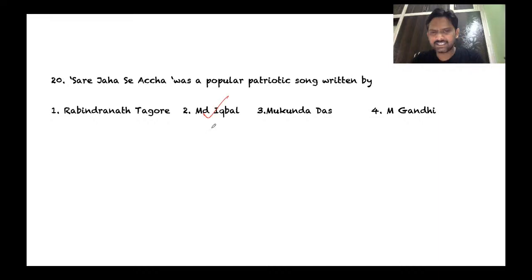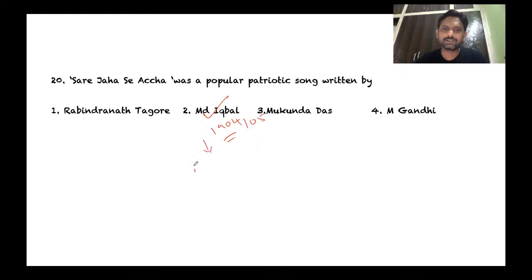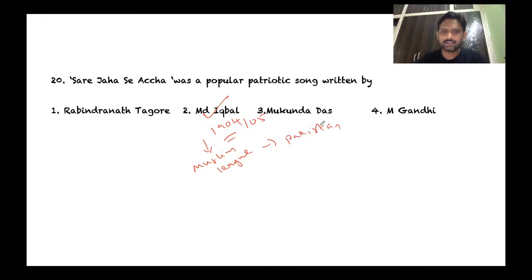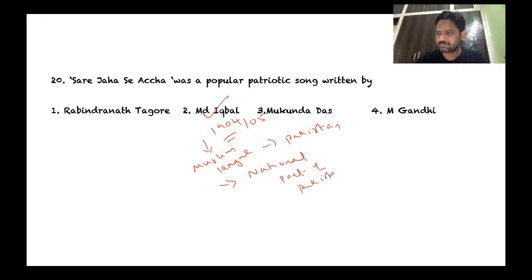Question 20: 'Sare Jahan Se Achcha' is a patriotic song — who wrote it? It was written around 1904-1905. This person was a prominent member of the Muslim League and later supported the creation of Pakistan. He is known for his poems and is often regarded as the national poet of Pakistan — the answer is Muhammad Iqbal.